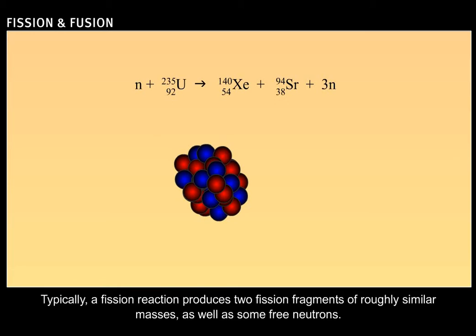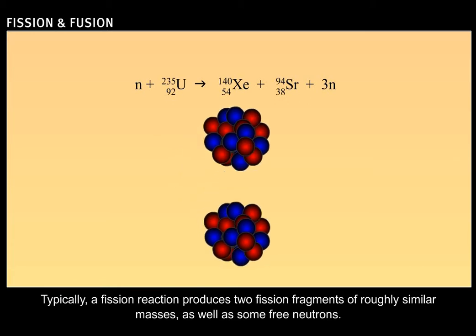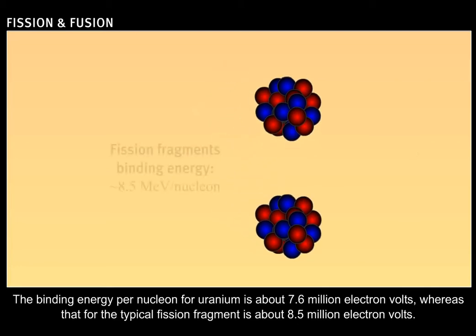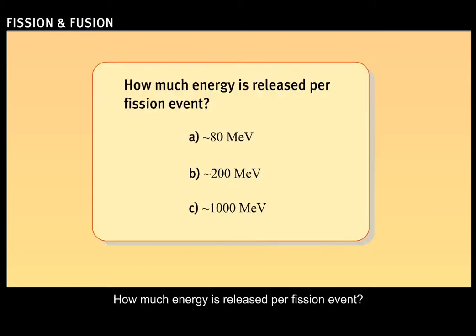Typically, a fission reaction produces two fission fragments of roughly similar masses, as well as some free neutrons. The binding energy per nucleon for uranium is about 7.6 million electron volts, whereas that for the typical fission fragment is about 8.5 million electron volts. How much energy is released per fission event?